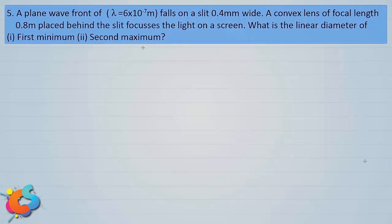Let us write down the data as given. The wavelength of the incident light is 6000 angstrom or 6×10⁻⁷ meter. The slit width is 0.4 millimeter. Students should understand the function of a convex lens in a Fraunhofer diffraction experiment. It is placed very close to the slit. When a parallel beam is incident on the slit, the convex lens focuses the beam on the screen, but the screen should be placed at the focal plane of the convex lens. The focal length of the lens is given to be 0.8 meter.